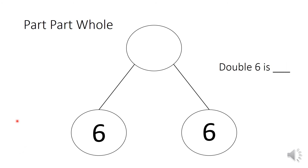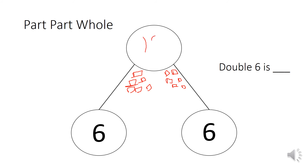Let's work this one out together. I'm doubling the number six because I've got a six in my part-part-whole. So double six is... We could work this out in our heads doing six add six, but to help me I'll draw underneath: one, two, three, four, five, six — and another six. Counting all the squares together: one through twelve. Or you could count on — put seven in your head, then use fingers to count up: eight, nine, ten, eleven, twelve. So double six is twelve.